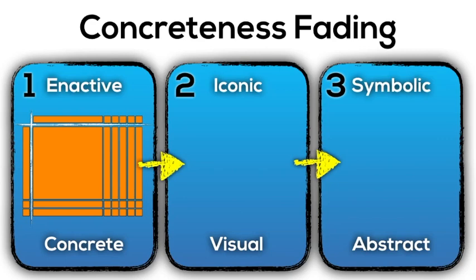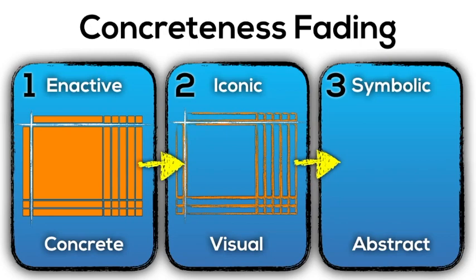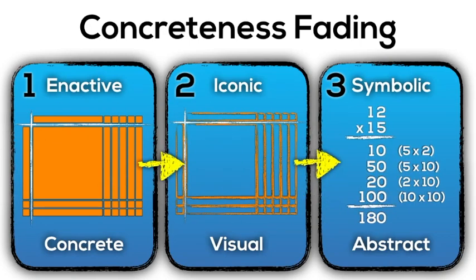Over time, students will again begin to skip using the concrete manipulatives and opt to start drawing the array using base 10 configuration on paper and possibly in their mind. As they become proficient doing this, they'll begin using more symbolic notation such as this conceptual multiplication algorithm, known to many as partial products, but ensuring that students do not forget how to connect these pieces of the symbolic notation to the inactive and iconic stages of concreteness fading.